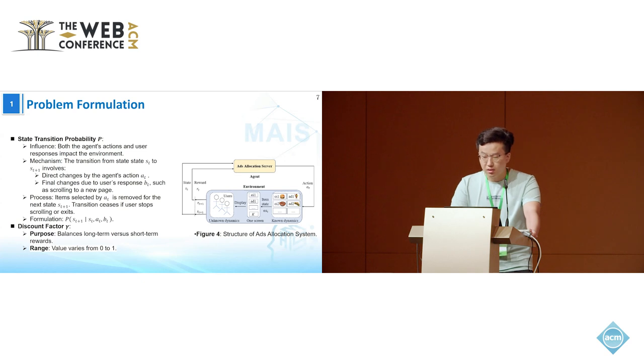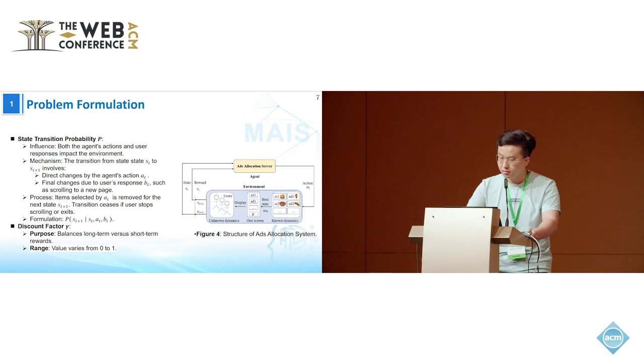The agent takes an action, and the system displays the recommended products, removing the displayed items in the next state. The second step involves the user's response, such as scrolling down or leaving. A discount factor is used to balance short-term and long-term rewards, with a value ranging from zero to one.